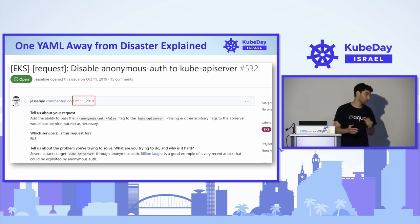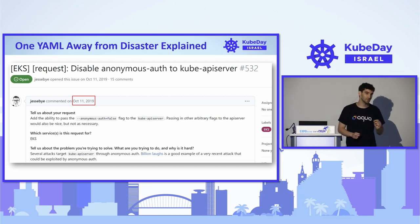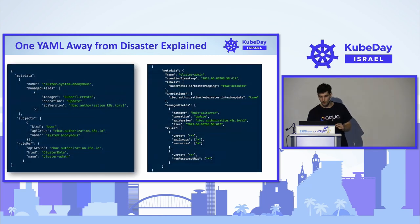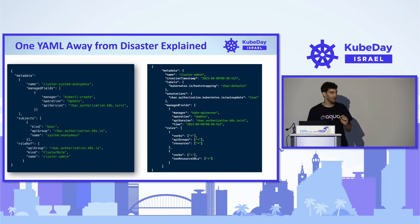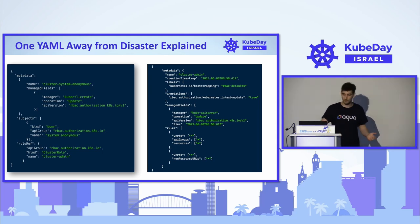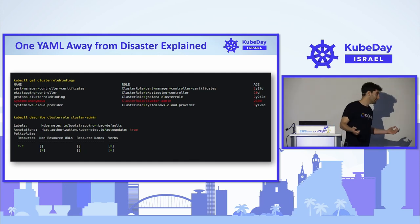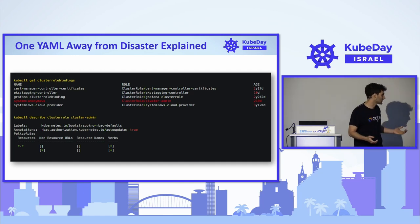The system:anonymous configuration is a known problem. Since 2019, people have been asking EKS to change this configuration, and even years later, nothing has been done. The default configuration makes us one step away from disaster. Giving the anonymous user any permissions practically means giving permissions to the whole world. We've seen clusters that gave the anonymous user cluster-level permissions.